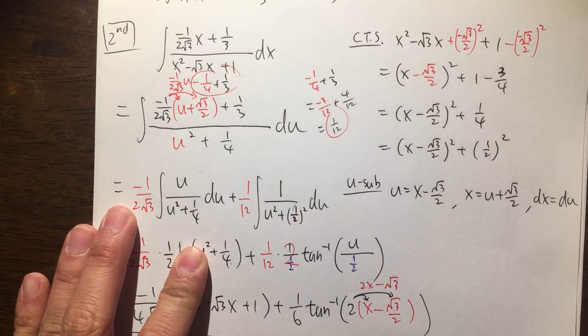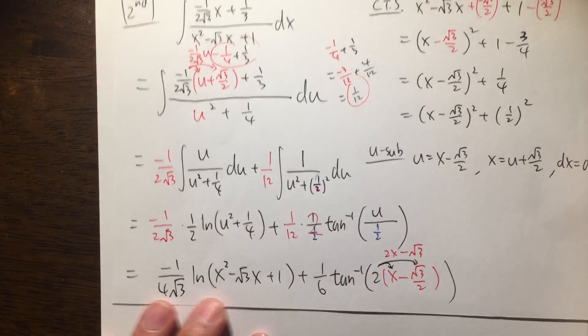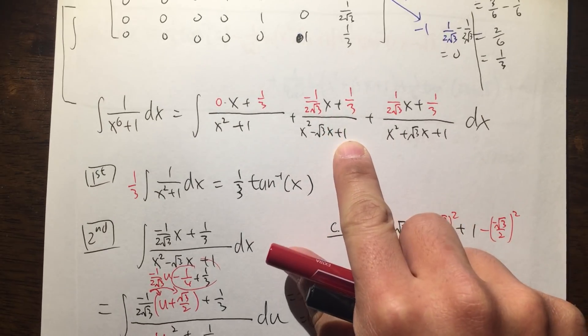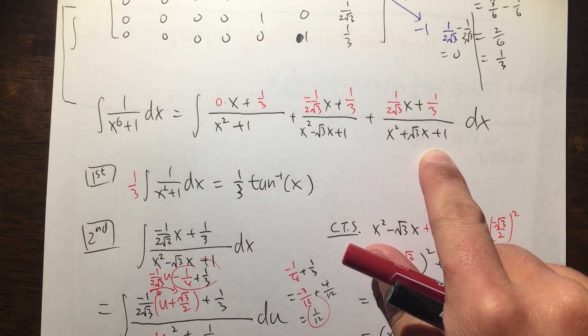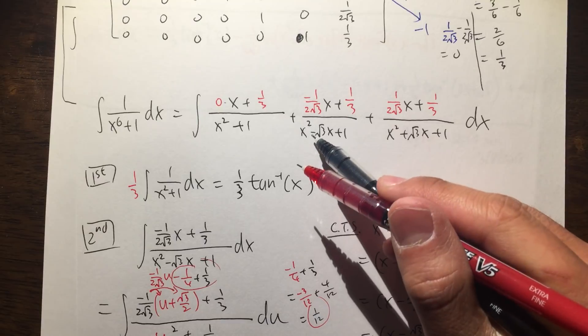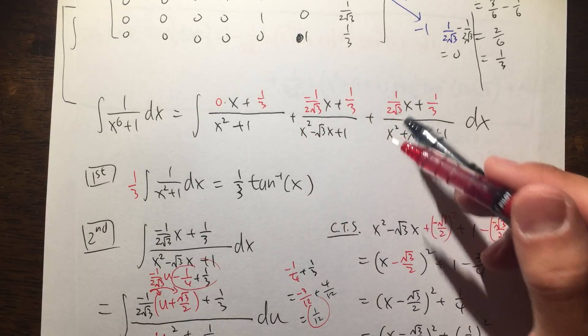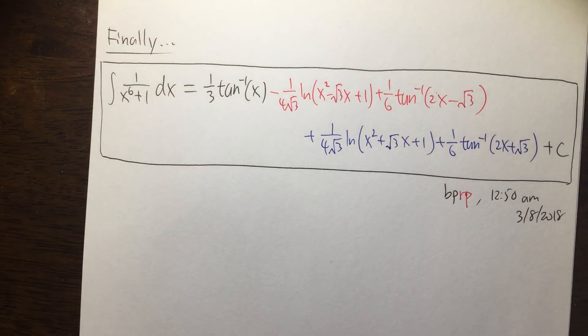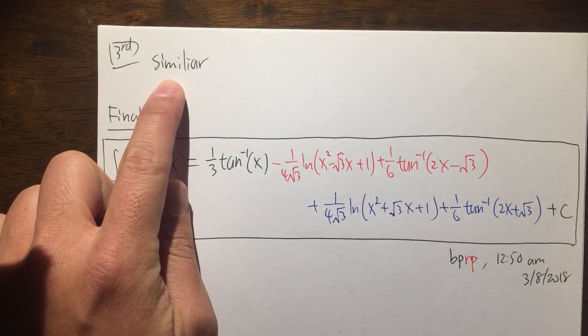So that's pretty much what we have, and this is the second part of this integral. And notice that the third integral is extremely similar, because instead of the minus here you have the plus, instead of the minus here you have the plus. So the third one is actually really, really similar.